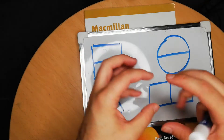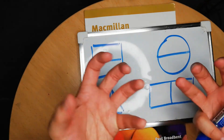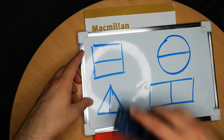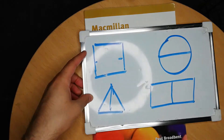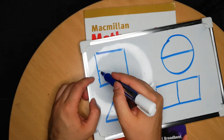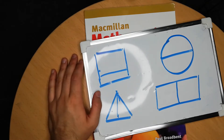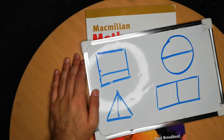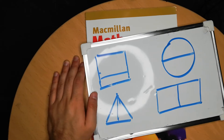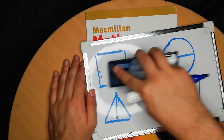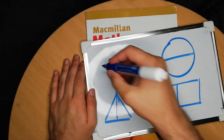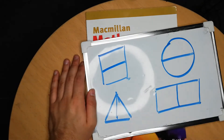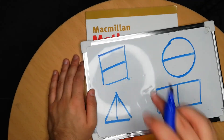Half means breaking something into two equal parts. So if we do this, for example, this is not a half — these are not equal parts. Half is only when there are equal parts, like this. These two are equal, so we can call it a half.